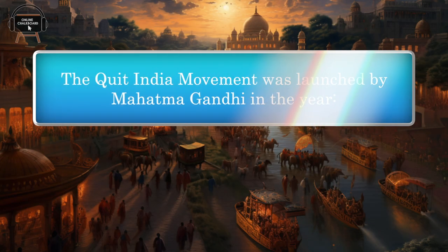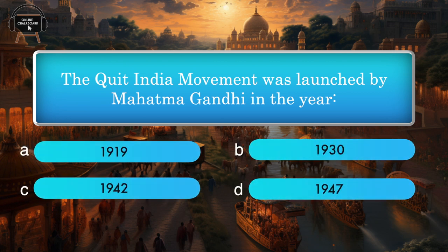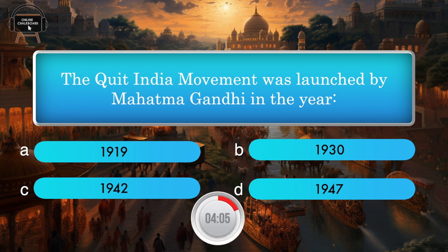The Quit India Movement was launched by Mahatma Gandhi in the year — 1919, 1930, 1942, 1947. Answer: 1942.